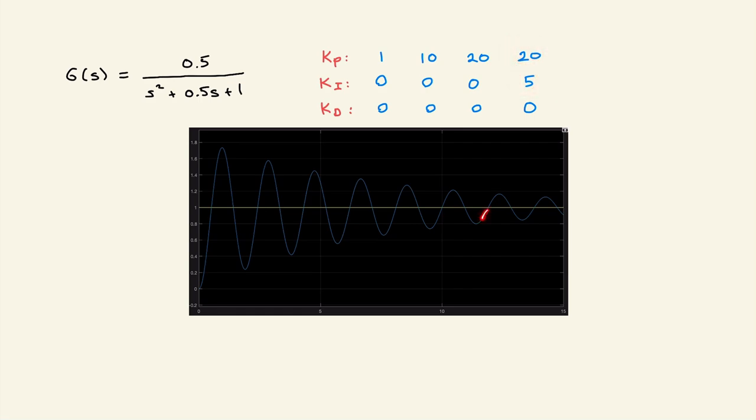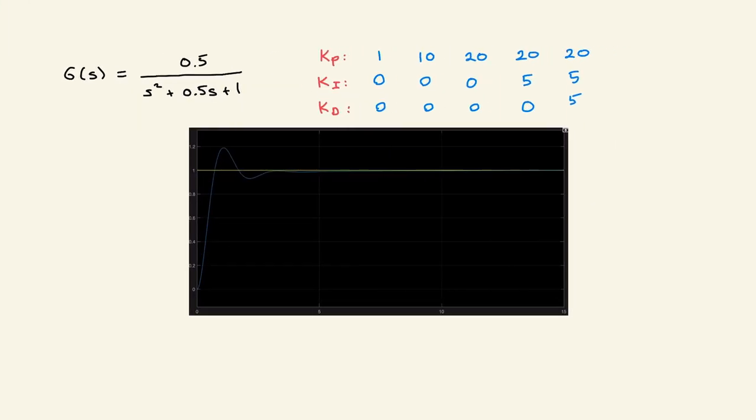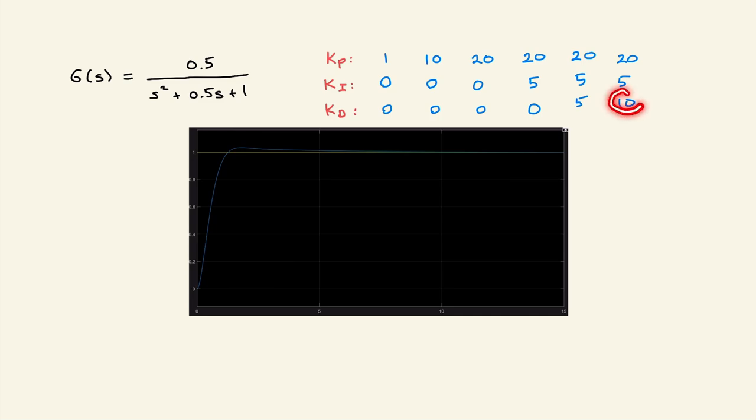Now you see we are oscillating around this command. Rise time is still good, so we could be able to track this command by playing with Kd. So now let's put some Kd, keeping them the same, Kd is 5. We kill all these oscillations. We have some overshoot so there is room for improvement. Let's increase Kd to 10. We have a nice slope and this is kind of an acceptable response, a little bit overshoot but that's okay.